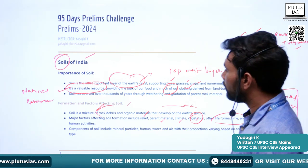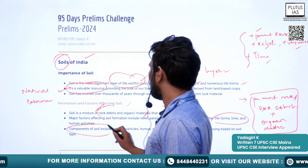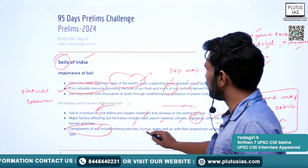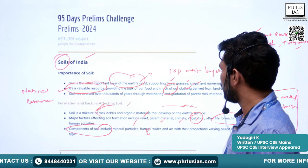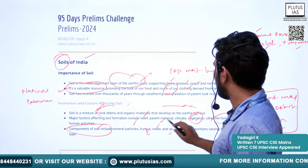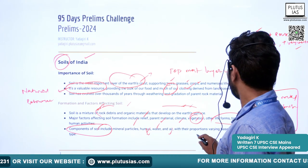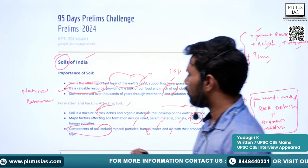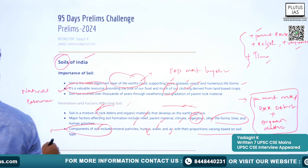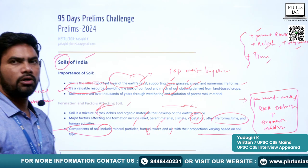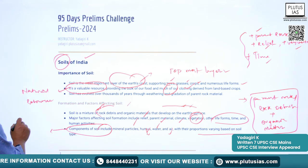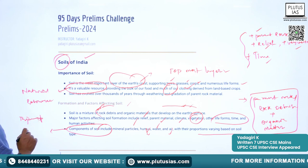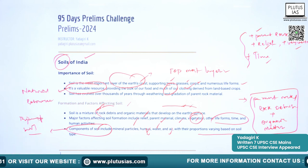The components of the soil include mineral particles, humus — which is organic material — water and air, with their proportions varying based on the soil type. Based on the percentage or proportion of these components, the type of soil varies.